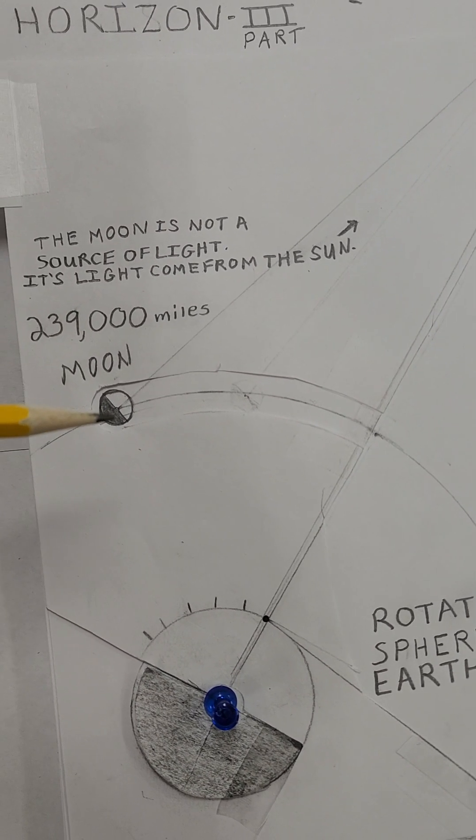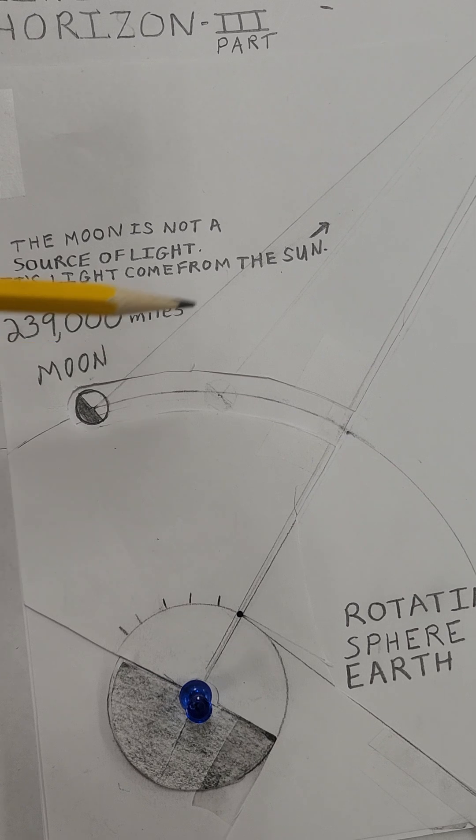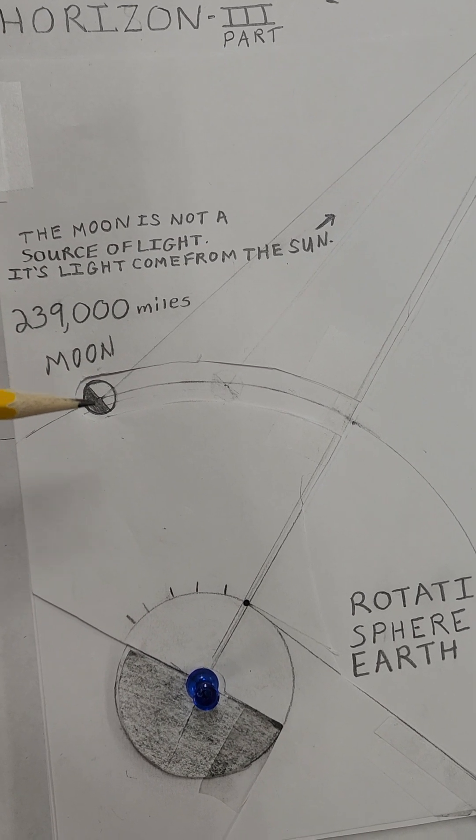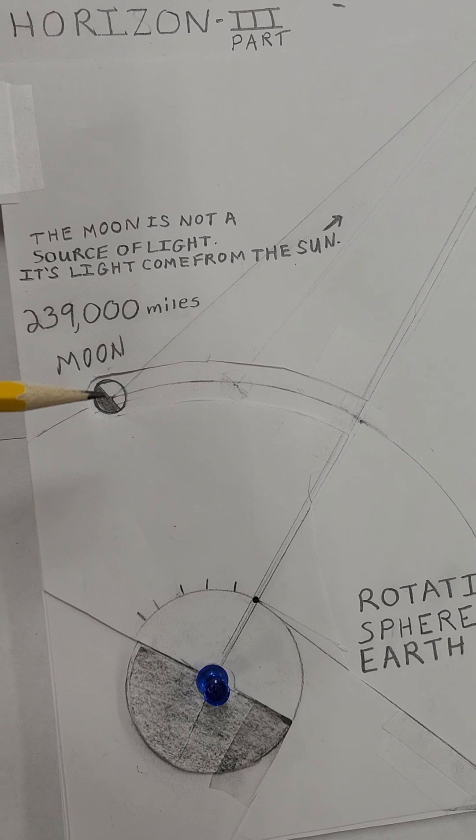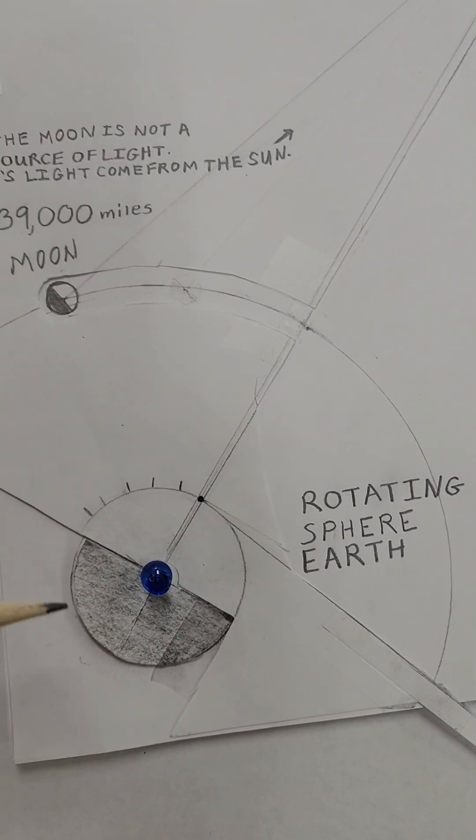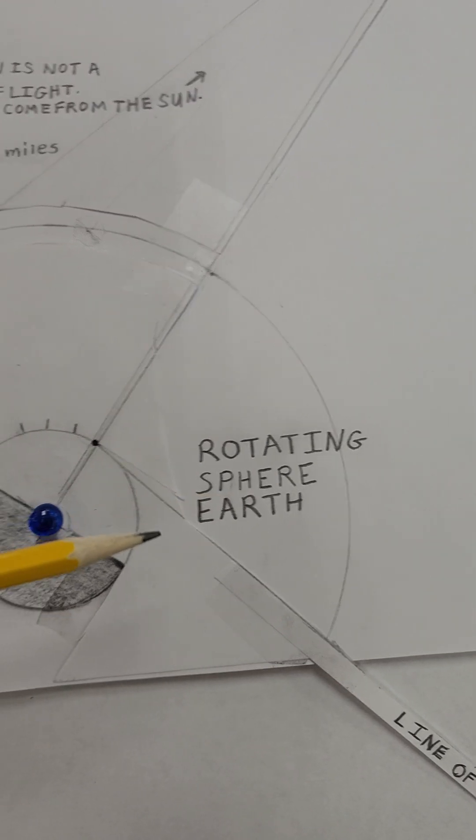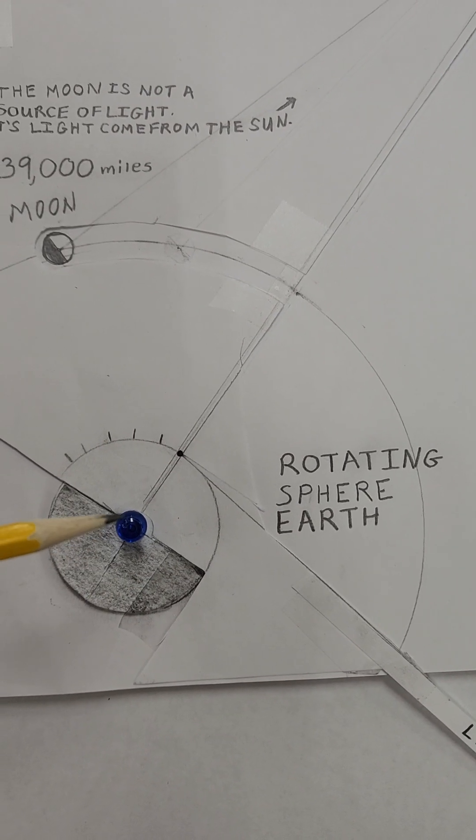Same thing for the moon. The light of the sun lights up this side of the moon, and now you have the dark side of the moon. Half of the moon and half the earth is always lit up by the sun. That's the rotating spherical earth.